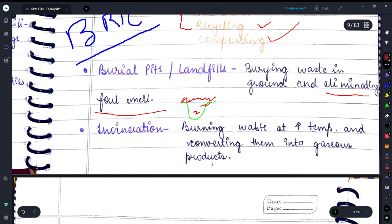The next process is incineration. In this, what is done? Burning waste at high temperature and converting them into gaseous substances is known as incineration.